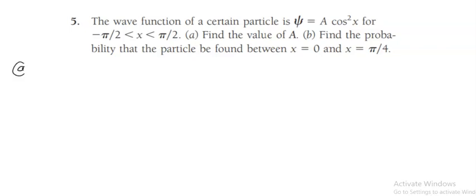Let us start with part A. We have to find the value of A, that means we have to find the normalization constant of the given wave function. So psi is equal to A cos squared x.